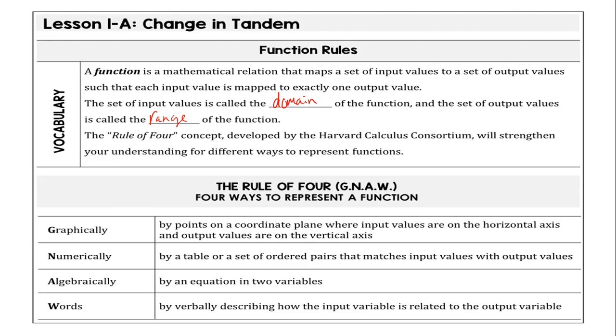So what is the G-N-A-W represent is graphically, numerically, algebraically, and words, right? These are all the ways that by now we should be able to work with a function. Words. By words, they mean word problems, applications.